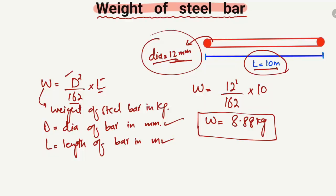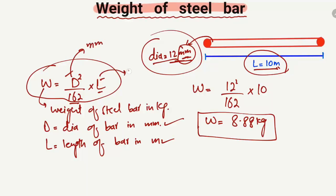I hope you understand this formula. Keep in mind that if the diameter of the bar is not in millimeters, you must convert it to millimeters first. Similarly, if the length of the bar is not in meters, you must convert it to meters, because this formula is derived for diameter in millimeters and length in meters, giving weight in kilograms.